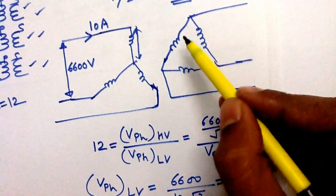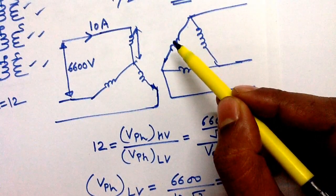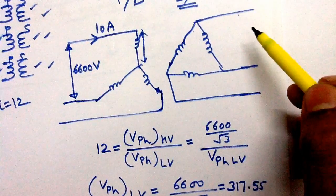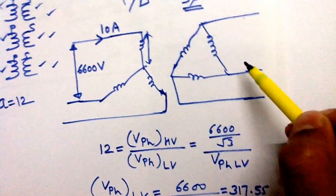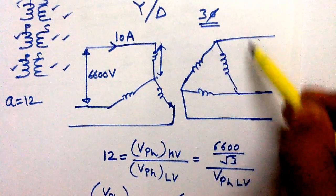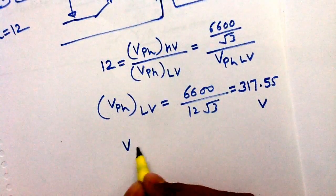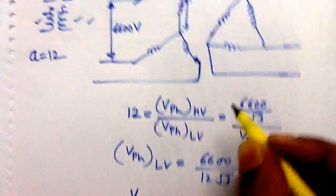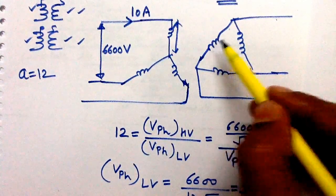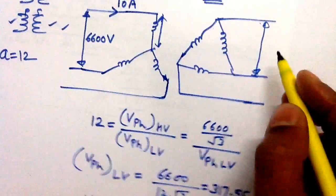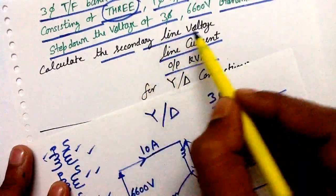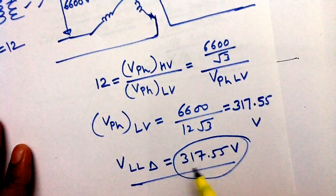In the case of delta connection, the voltage appearing in one phase is the same as the line-to-line voltage — that is, phase voltage equals line-to-line voltage. So the secondary line-to-line voltage is 317.55 volts. This is the answer to the first part: the secondary line voltage is 317.55 volts.